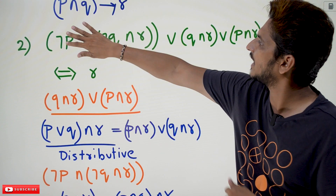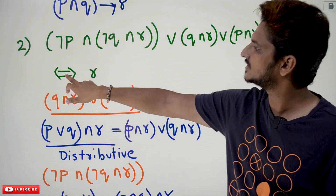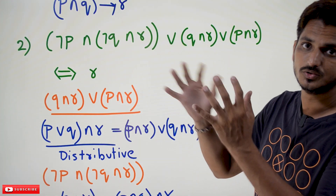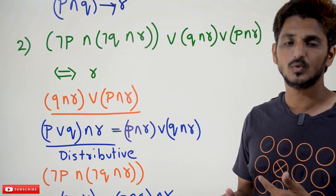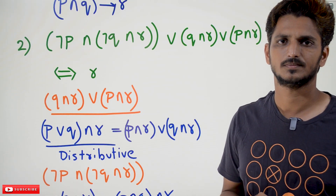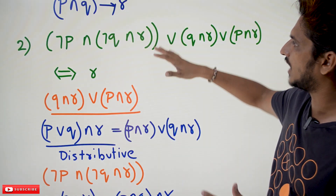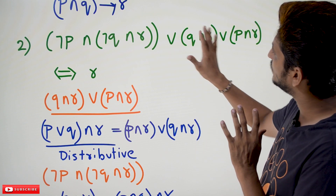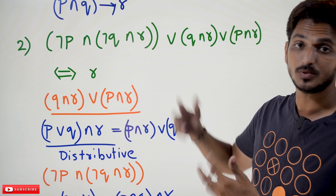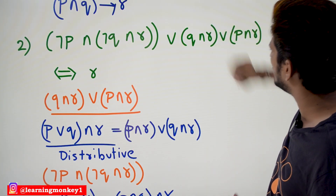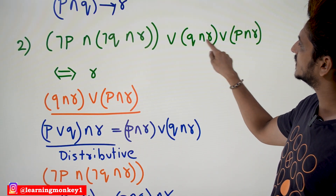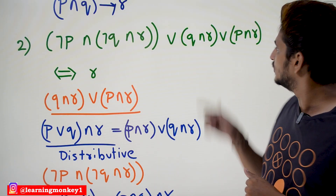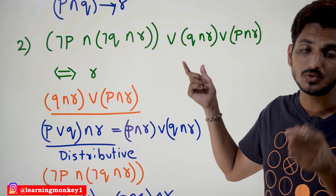For the second example, this entire equation is the LHS, and this is equivalent to R — the RHS is just R. So this entire LHS equation can be reduced to R, and if we do that we can show LHS equals RHS. Take this LHS part — it is very big. Identify the possibilities in it. By looking at these two parts: Q conjunction R, disjunction P conjunction R — for this we can apply distributive law.